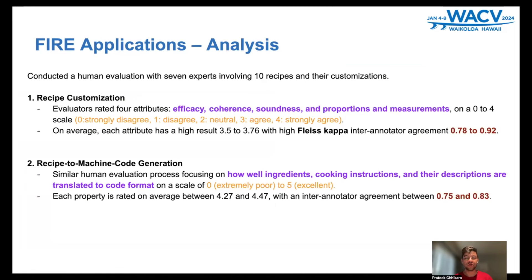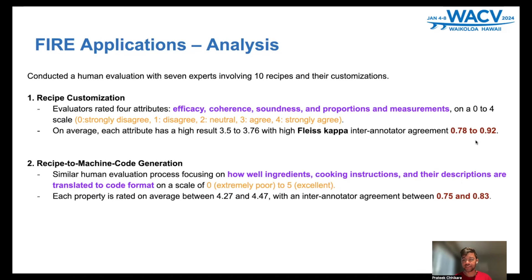We used LLMs for these two applications. Further, we analyzed our experimentation based on human evaluation. We conducted human evaluation with seven experts involving 10 recipes and their customizations. For customization, we used a scale from zero to four, where zero means strongly disagree and four means strongly agree, based on four parameters. For machine code generation, we set fields covering how well ingredients, cooking instructions, and their descriptions are translated to code format, on a scale from zero to five. Inter-annotator agreement was measured using Fleiss' Kappa, and we obtained a high score of 0.78 to 0.92 for customization and above 75% for recipe-to-machine code generation.